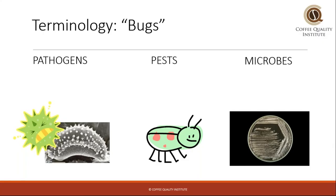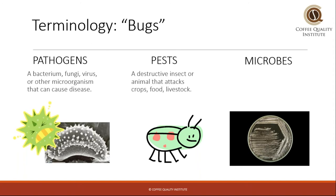First, let's talk about what we mean when we say bugs. I sort of think of bugs as encompassing pathogens, which are usually bacteria, fungi, viruses, and other microbes that can cause disease. Pests, which are the little bugs you can see or relatively easily see that attack crops. And then the microbes — bacteria, fungi, and some other types of microorganisms.